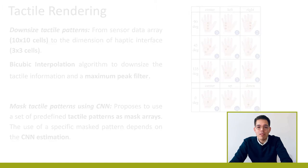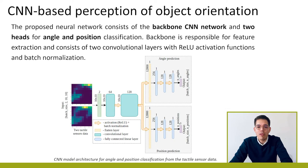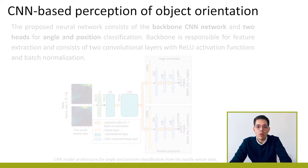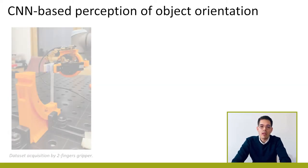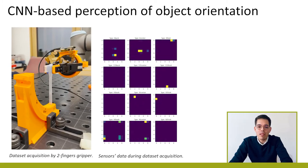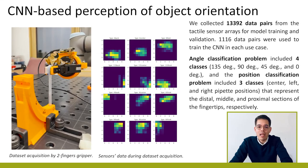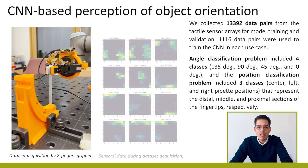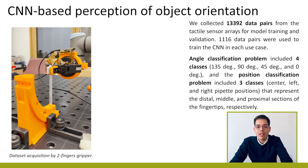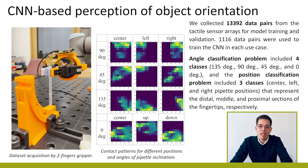We have implemented a classification CNN model with two heads for pipette angle and position recognition. To acquire the dataset, we used a pipette holder to set up twelve use cases. The angle classification program includes four classes, and the position classification program had three classes, representing the distal, middle, and proximal sections of the gripper's fingertips.